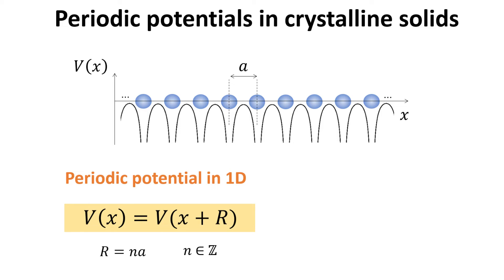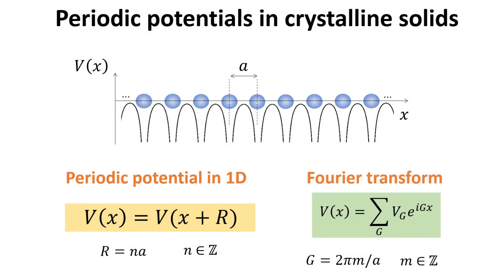Because the potential is periodic, it can be Fourier transformed. The Fourier coefficients depend on a discrete set of points G, the reciprocal lattice vectors. Note that the reciprocal lattice vectors are inversely proportional to the lattice constant A. Hence, the larger the spacing between lattice points in real space, the smaller the spacing of reciprocal lattice points in momentum space.